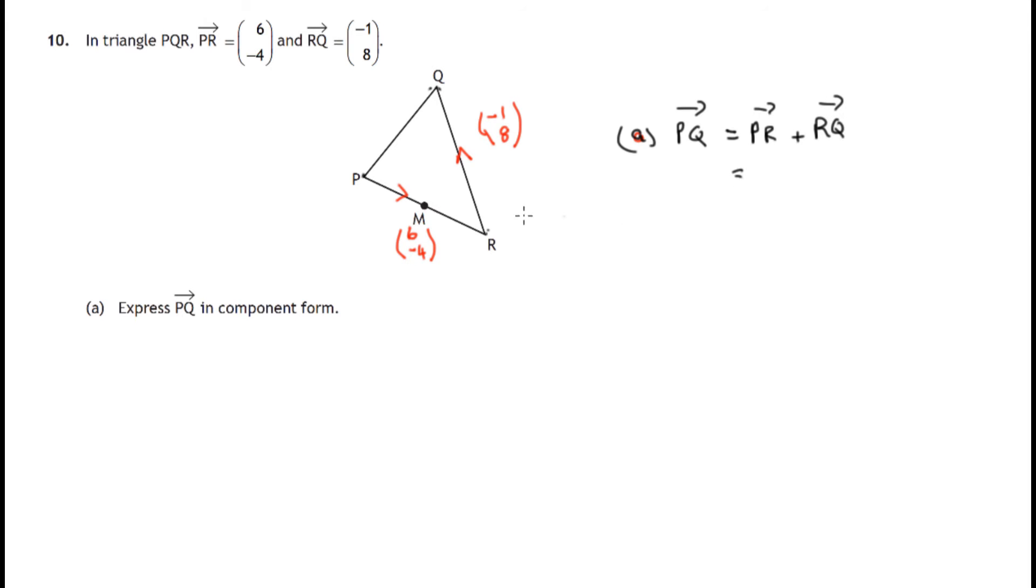So we do know what we've done in travelling from P to R, 6 to the right, 4 down, and we know what we've done in travelling from R to Q, 1 to the left, 8 up. That's the x and y components. So combining these, 6 to the right, 1 to the left, that would just be 5 to the right. 6 plus negative 1 is 5. The x components added give us 5, and then 4 down and 8 up will just be 4 up. The y components added give us 4.